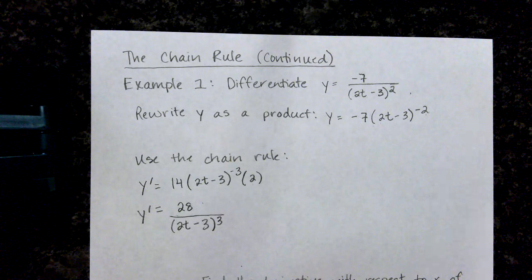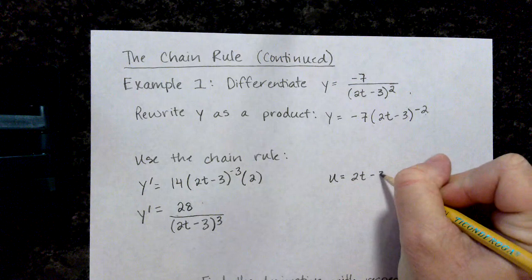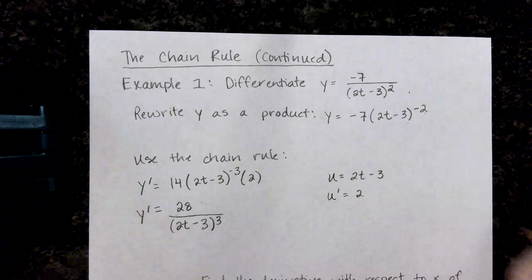Like I said, I'm hoping many of you are at the shortcut stage. If you're not, you are thinking u would be 2t minus 3, right? That's our inner function. So u prime would be 2.